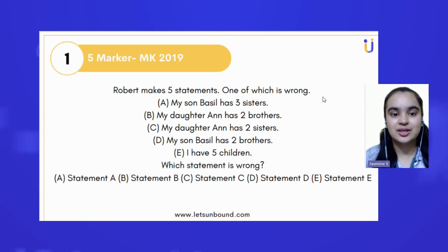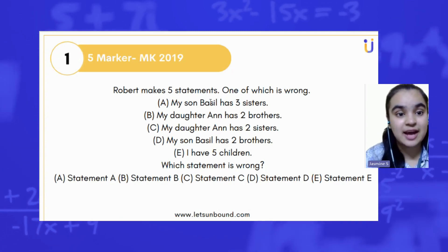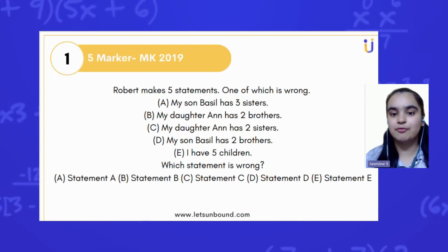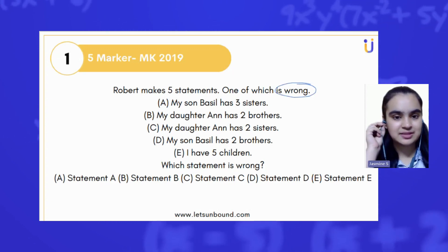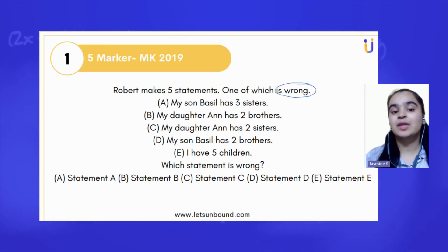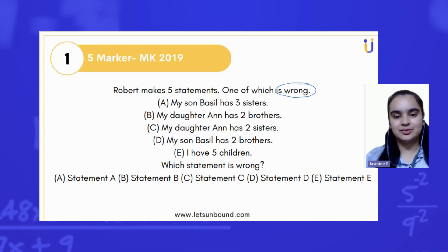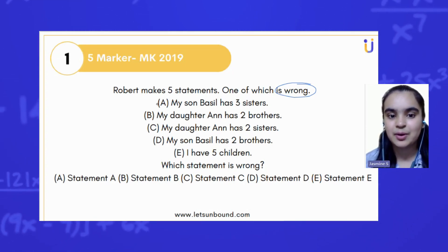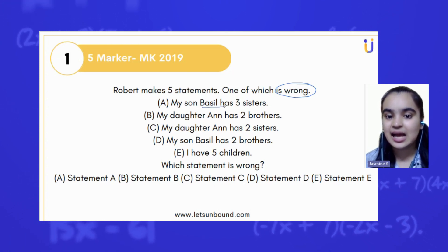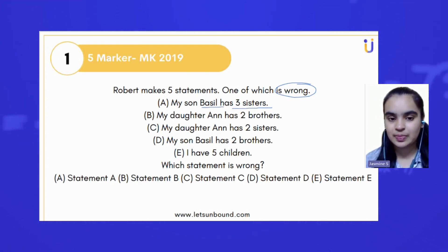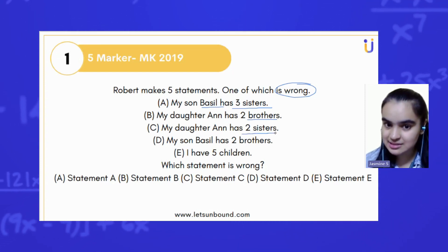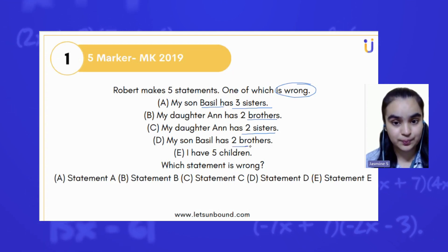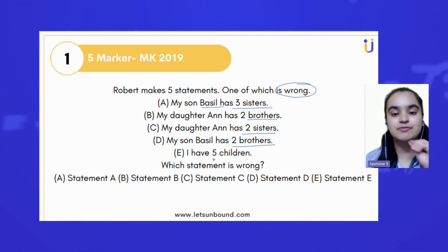Here is the question. Robert makes five statements, one of which is wrong. Let's look at the five statements. Statement number one: my son Basil has three sisters. Next: my daughter Anne has two brothers. My daughter Anne has two sisters. My son Basil has two brothers. And: I have five children.